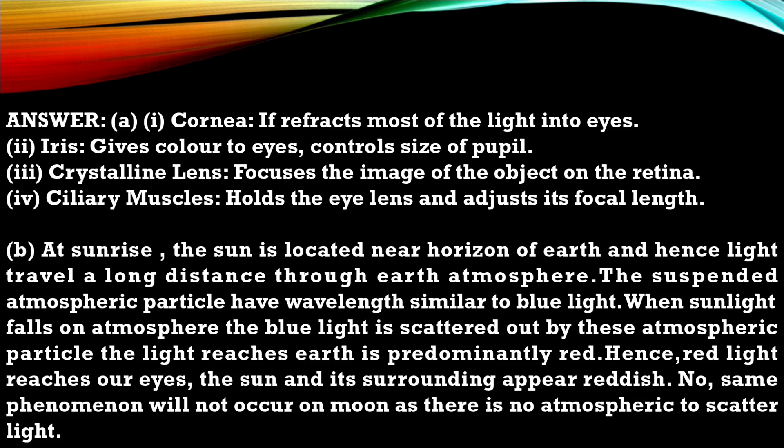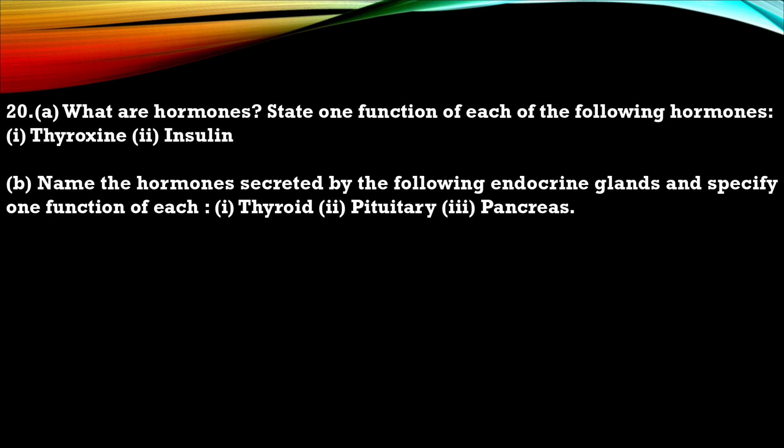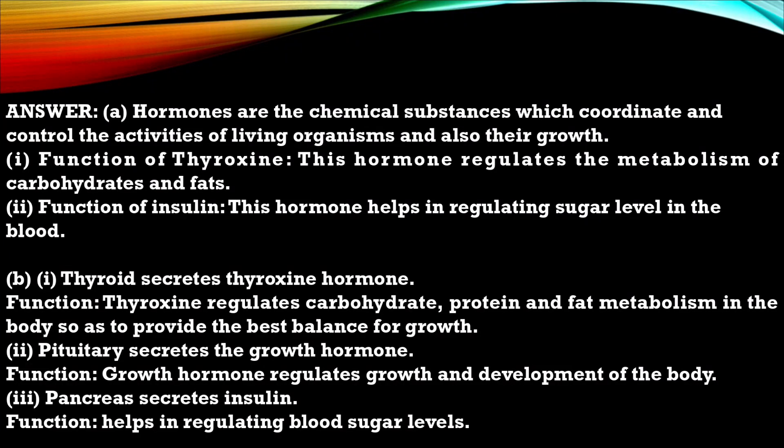Question 20. What are hormones? State one function of each of the following hormone: thyroxine, insulin. Name the hormone secreted by following endocrine gland and specify one function of each: thyroid, pituitary and pancreas. So this is the answer for that question. As you can see I have written all the answers in point wise. So make sure you are also writing point wise. It will be helpful for examiner and they won't cut your marks. They can easily see the important points of your answer.